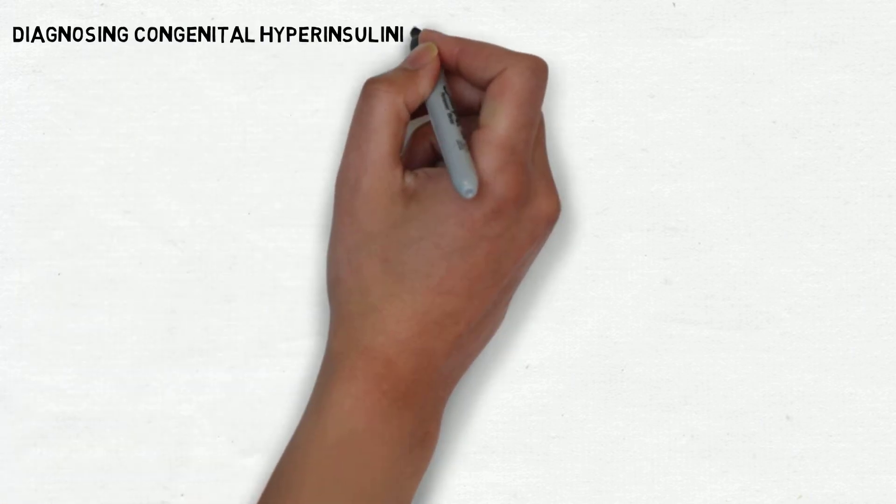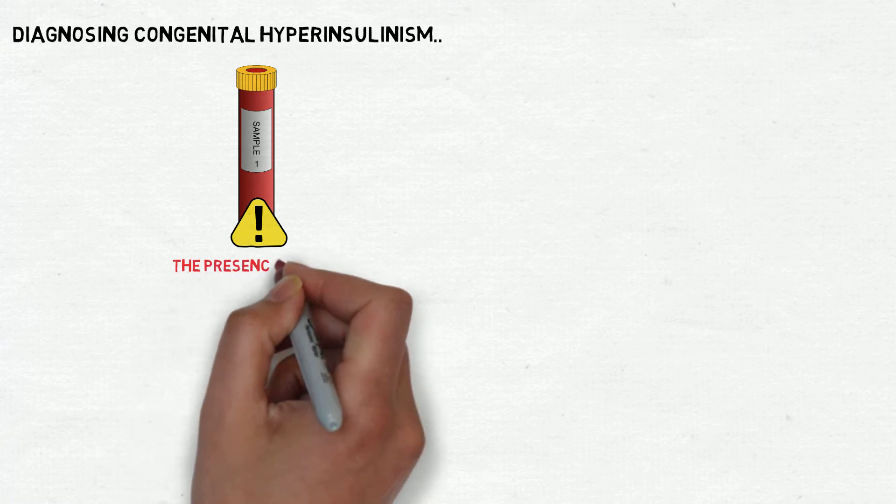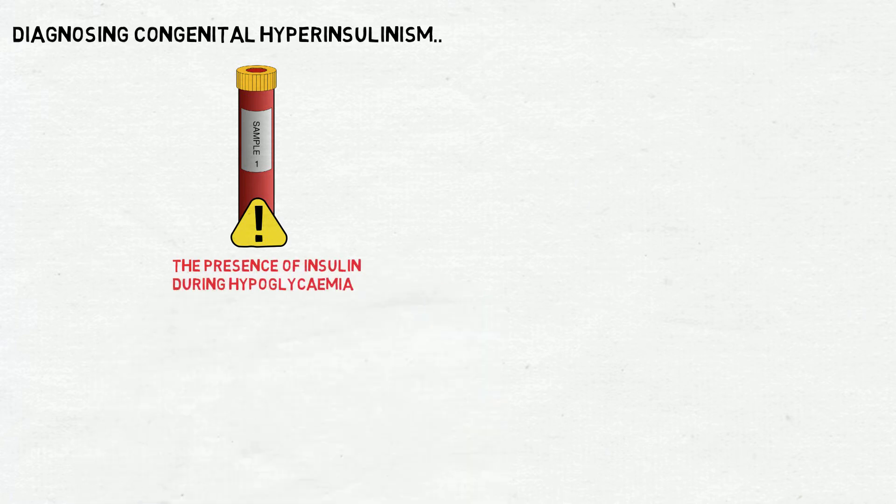Diagnosing congenital hyperinsulinism begins with a blood sample that reveals the presence of insulin during hypoglycemia, which is when blood glucose is low.